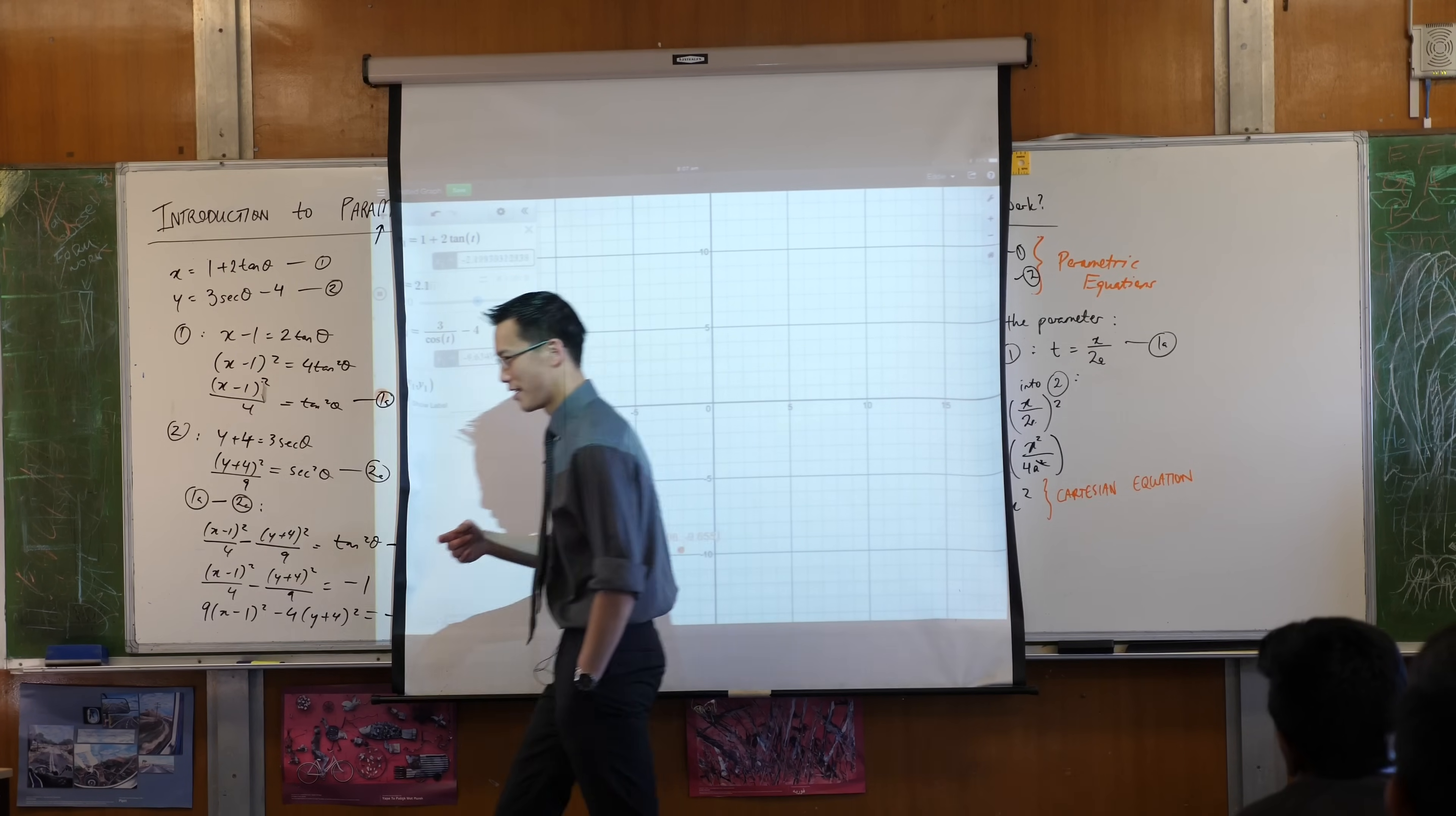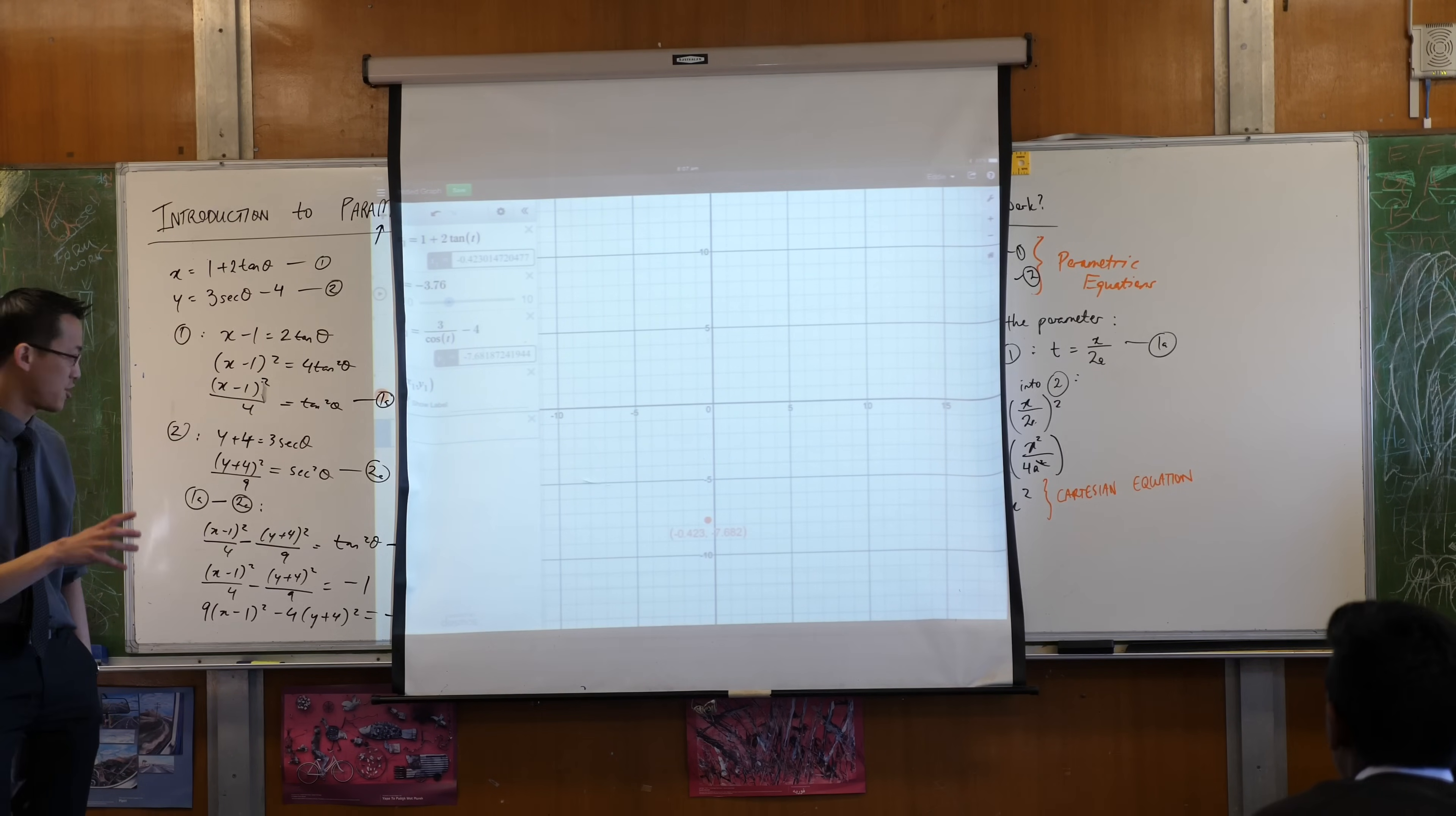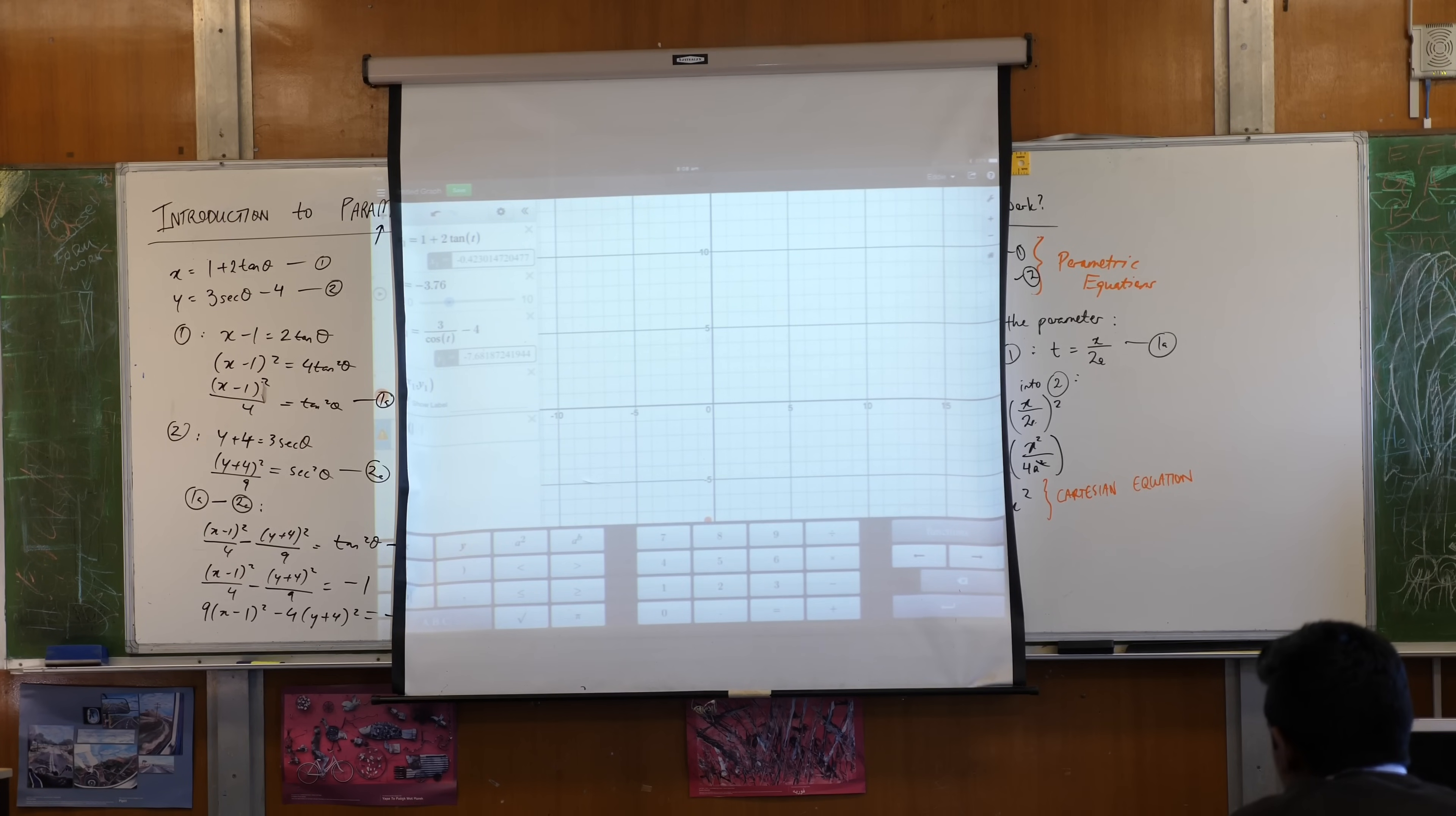Okay, so we just worked out what the Cartesian equation was, right? Okay, you stop moving. We'll put this Cartesian equation in. What do we got here? So I think we've got 9 outside of, what do we got? x minus 1? Minus 1 squared.